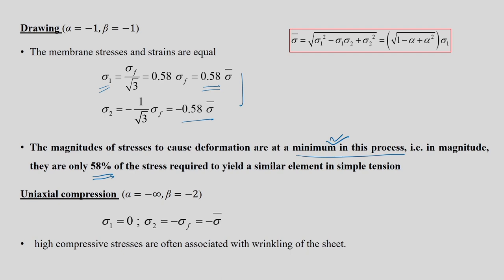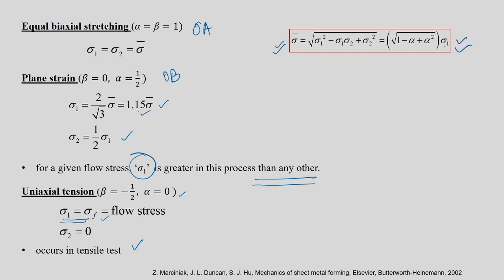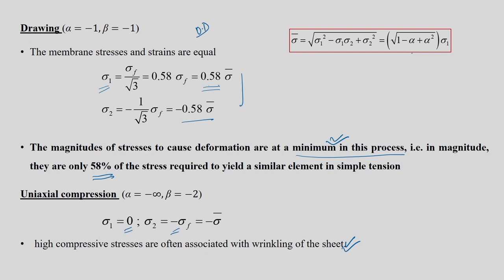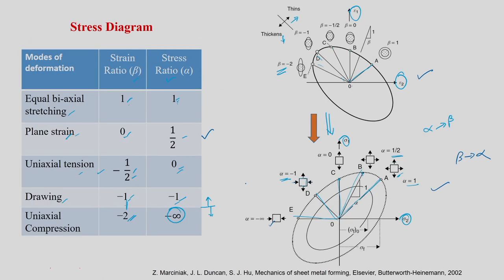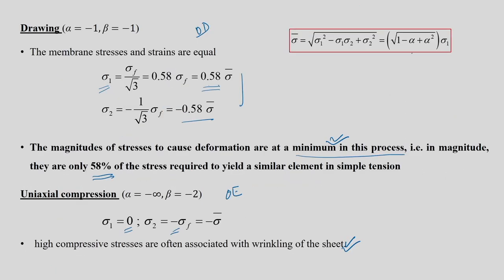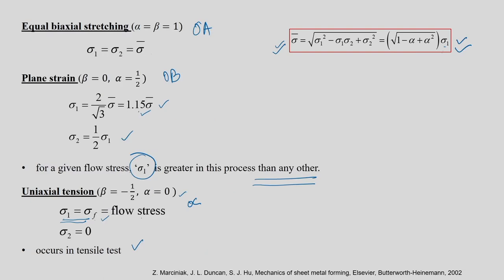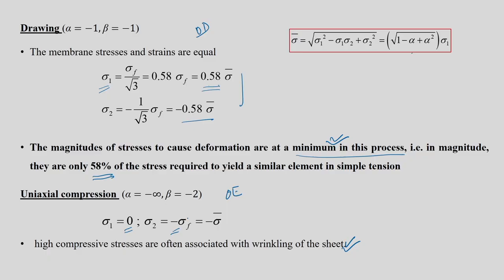In uniaxial compression OE, sigma_1 equals 0, so sigma_2 equals minus sigma_f on the negative side. This is going to create wrinkling on the flange of the sheet — we have seen this example at the edge of the flange region. So all five paths OA, OB, OC, OD, and OE come from the stress diagram. When alpha equals minus 1, you can reach yielding using only 58% of the stress required in uniaxial tension.